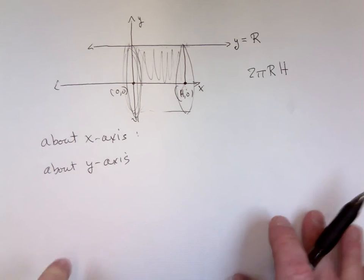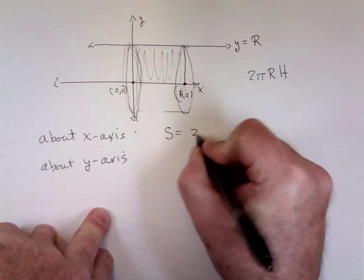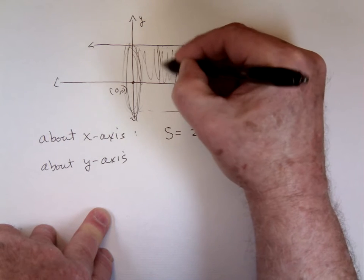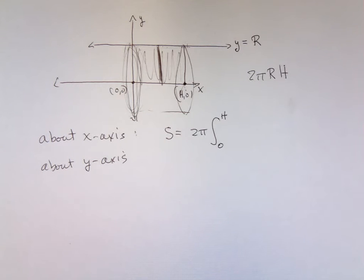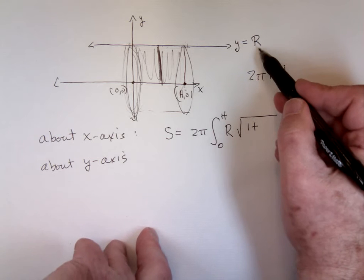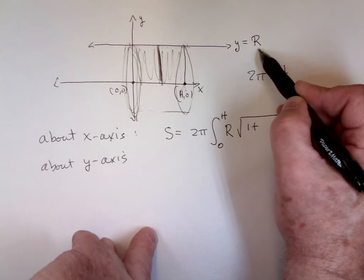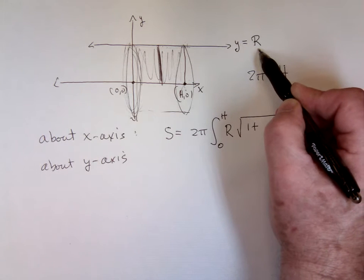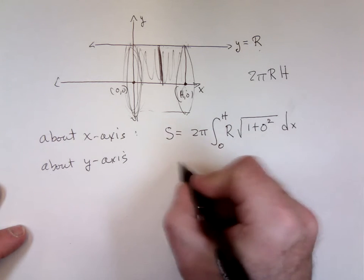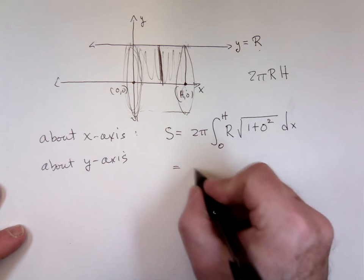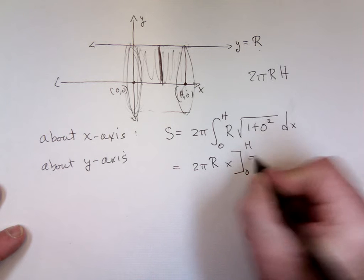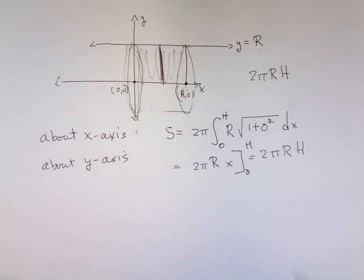That's what we should get when we do the integral. So let's do it. About the x-axis, the surface area is equal to 2π, the integral from 0 to h. When we go around the x-axis, r is this height above the x-axis, which is big R. Then the square root of 1 plus the derivative squared — the derivative of big R is 0, it's a constant. So we end up with the square root of 1, which is 1. We get 2πR times x from 0 to h, which gives us 2πRh.